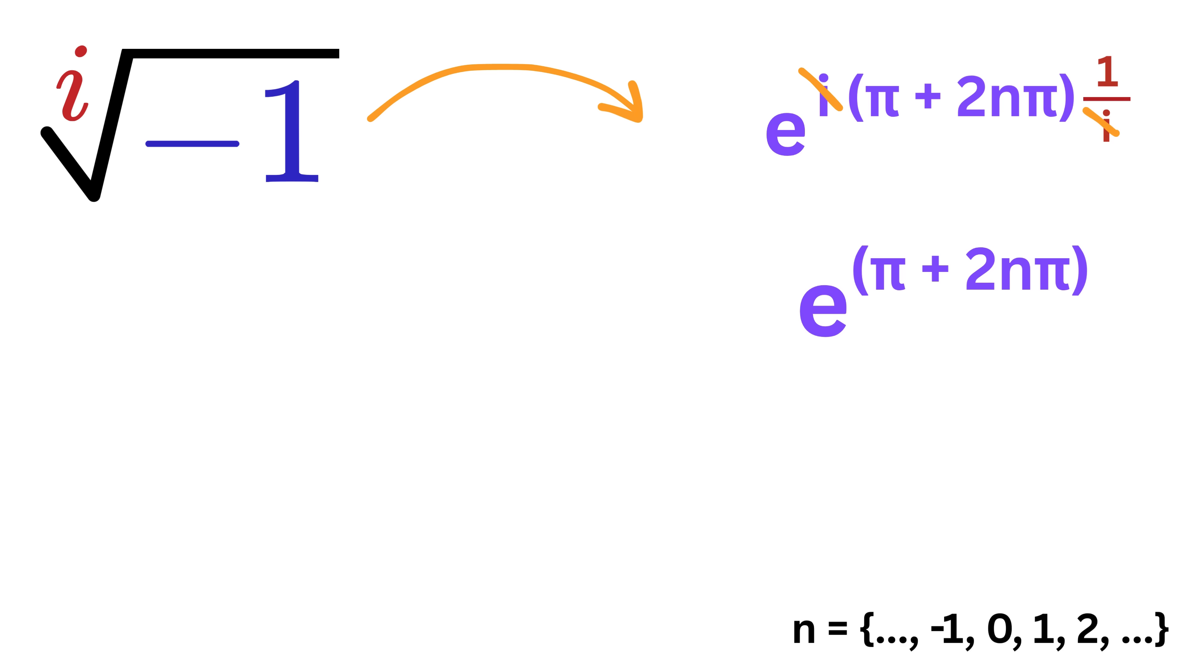Now, let us see what happens for some values of n. If n equals zero, we get e raised to pi. If n equals one, we get e raised to three pi. If n equals minus one, we get e raised to minus pi, and so on. So, there are infinitely many possible values, because n can be any integer. But among all these, the one where n equals zero, that is e raised to pi, is called the principal value, and that is our main or simplest answer, which in decimal form is approximately 23.1406926.